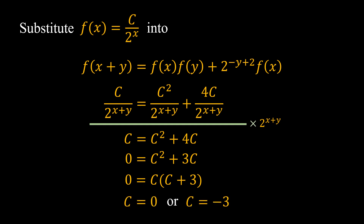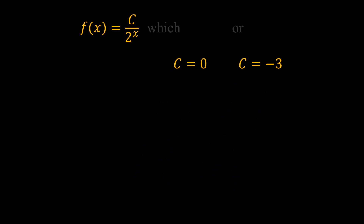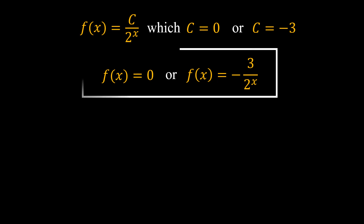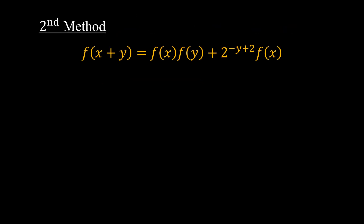This gives us c² + 3c = 0. Factoring, c(c + 3) = 0, so c = 0 or c = −3. Therefore, f(x) = 0 or f(x) = −3 / 2^x. Those are the solutions from the first method.